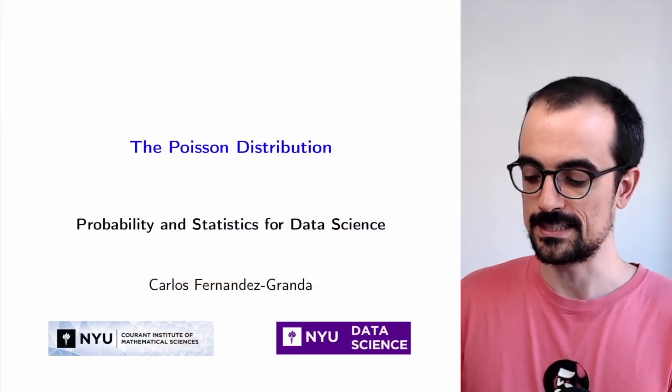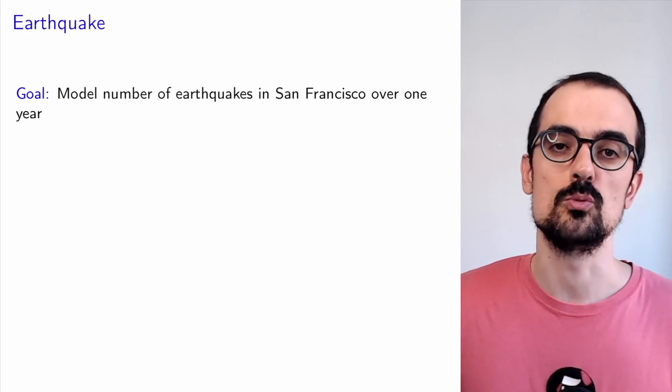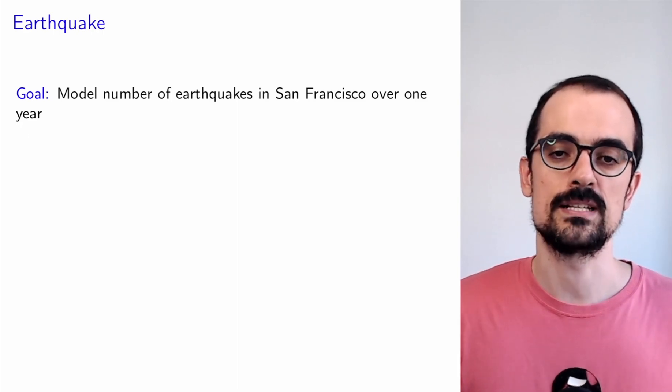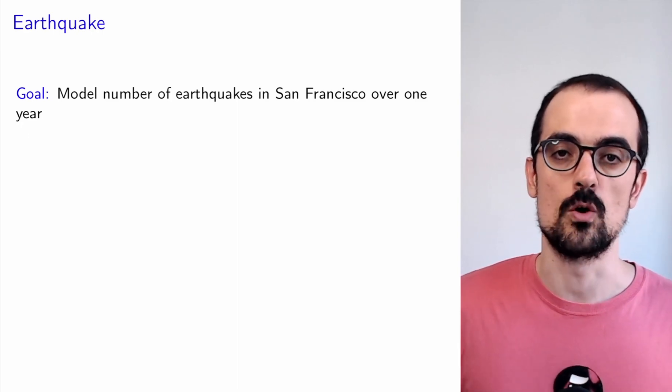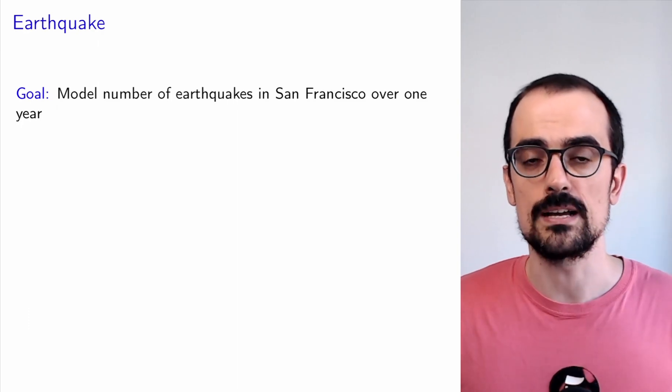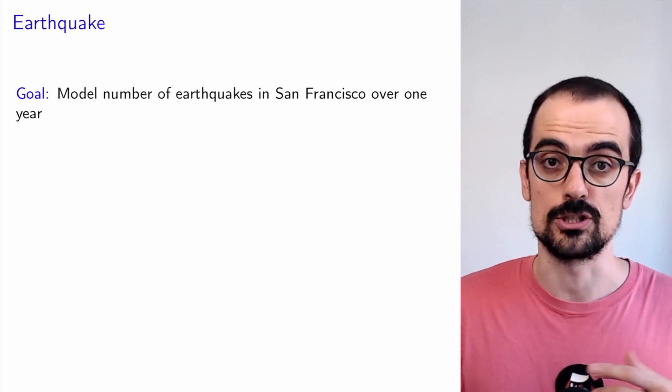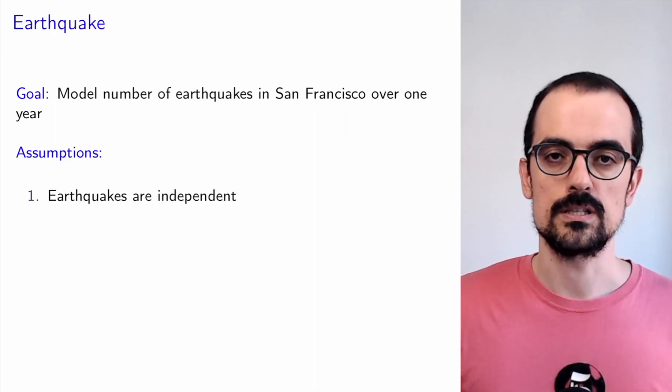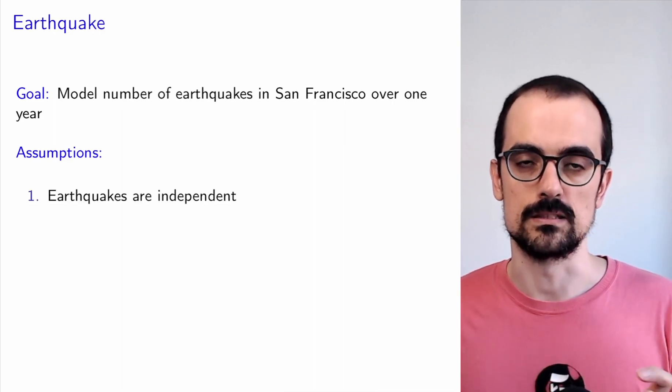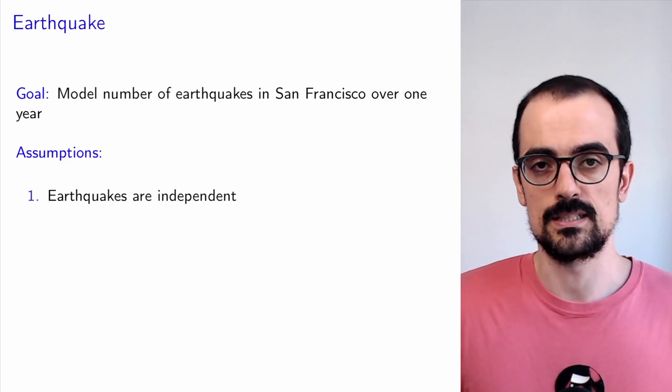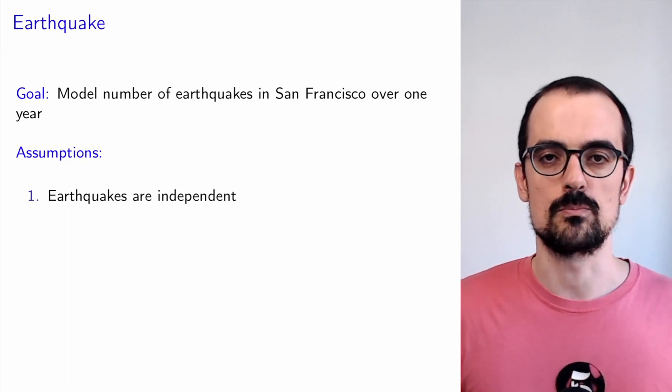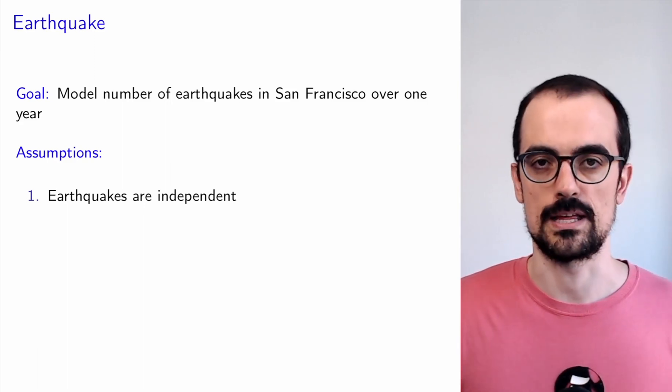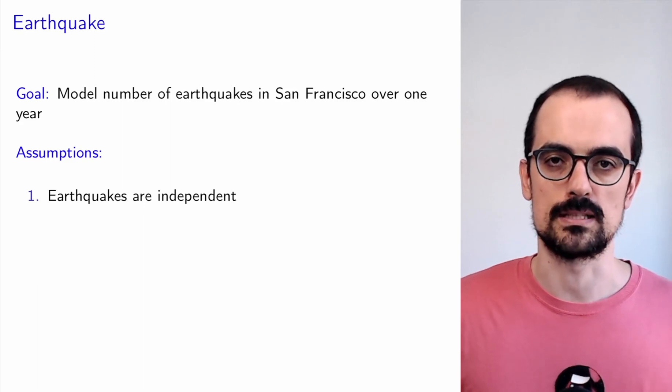This is about the Poisson distribution and our motivating example is that we want to model the number of earthquakes that occur in San Francisco over one year. In order to derive parametric models, we need to make assumptions. We're going to make the following assumptions. First, the earthquakes are independent, they occur independently. This is probably not true in practice because you have aftershocks and things like that, but we're going to assume that that's reasonable.